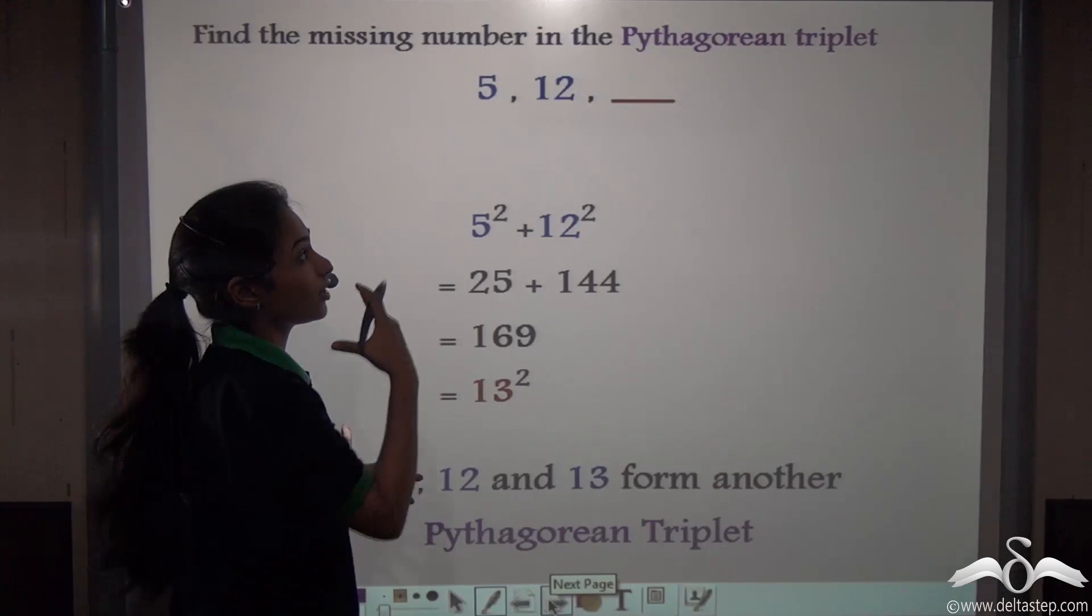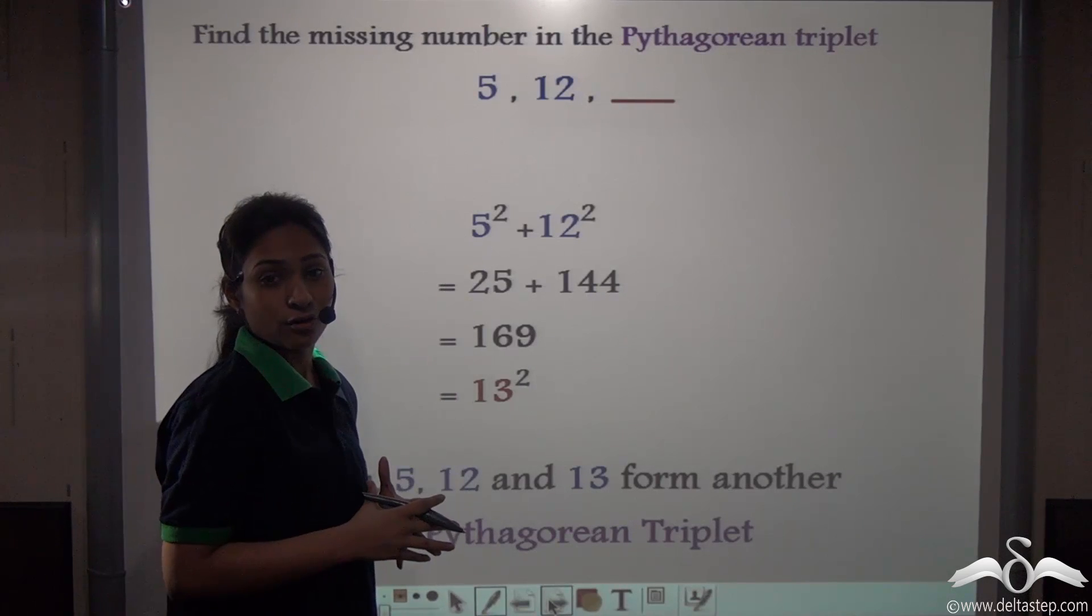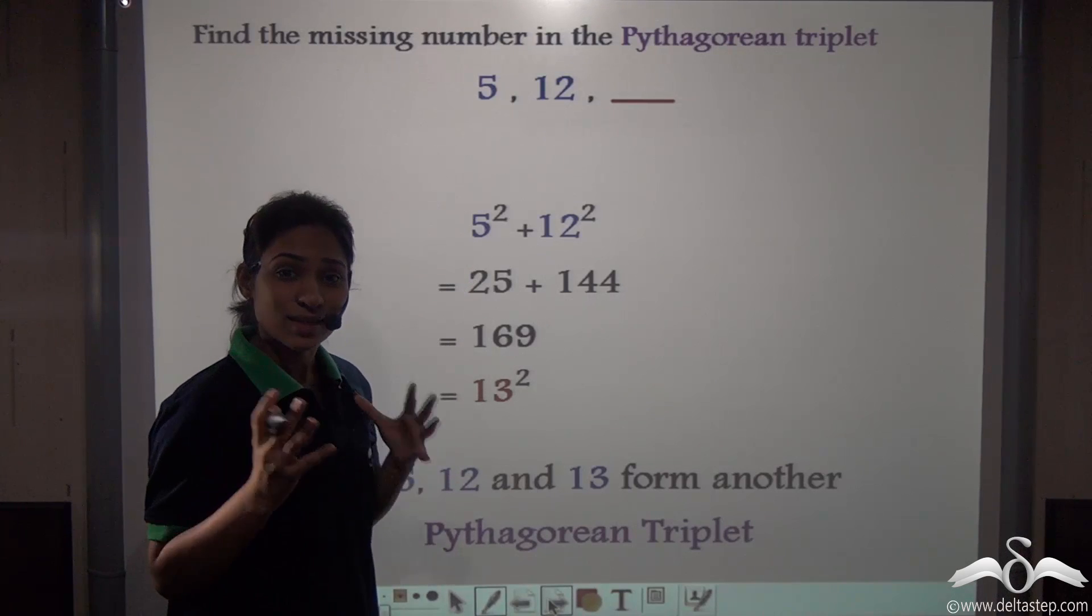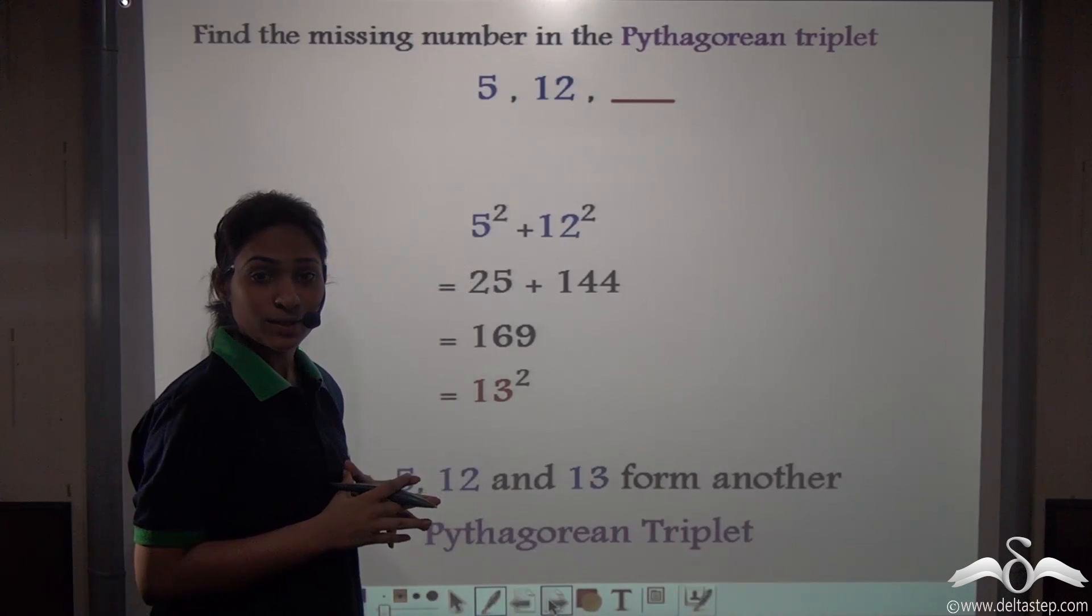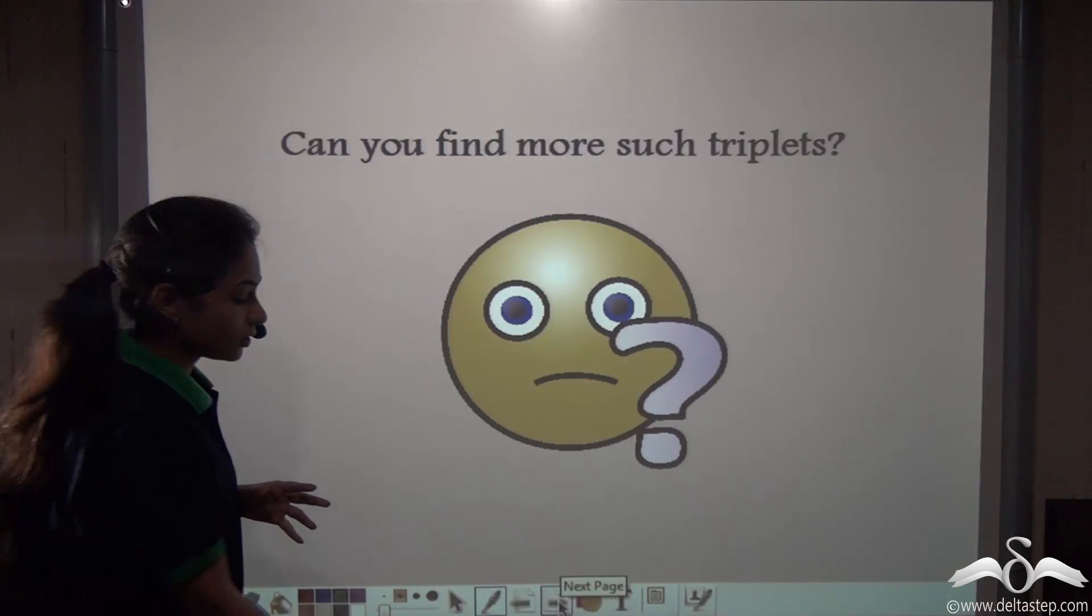So you can say 5, 12, and 13 form another Pythagorean triplet. But how many such triplets can you just memorize like this? That 5, 12, and 13 are Pythagorean triplets or 6, 8, and 10. There must be some way to find these triplets. Well, let's see what are those ways.